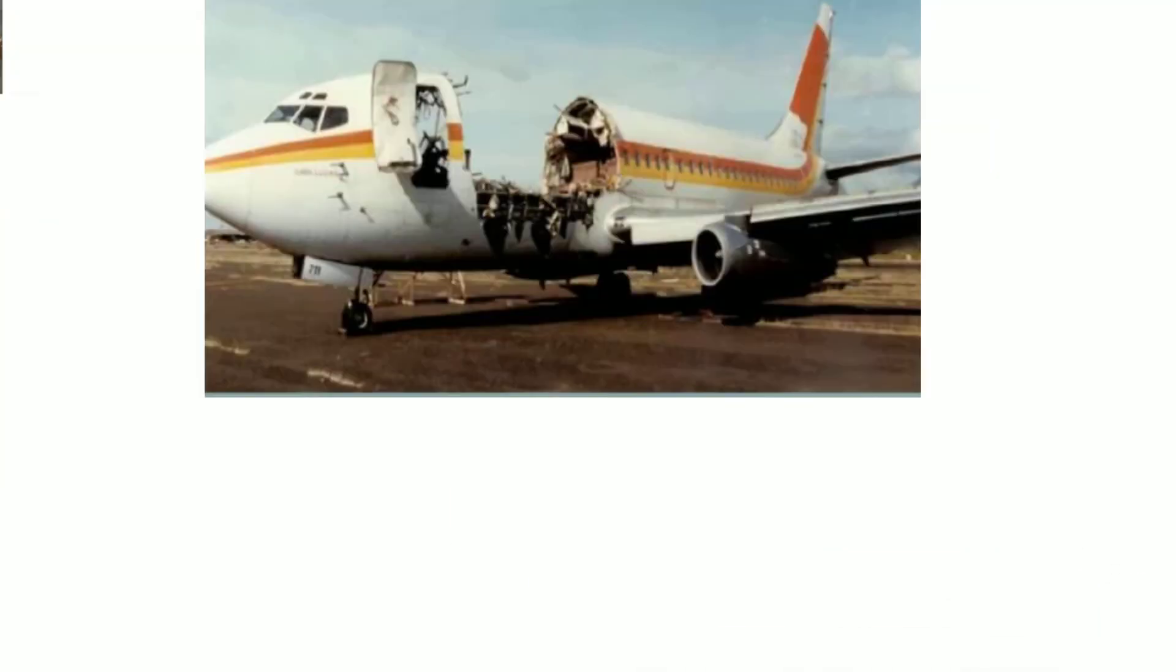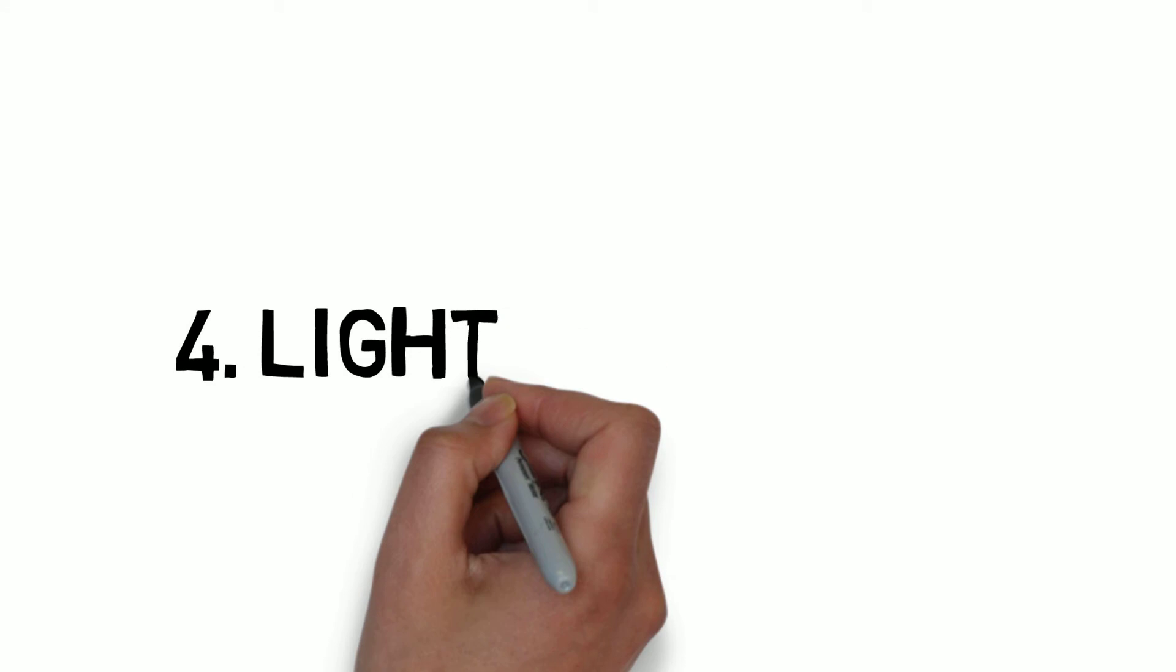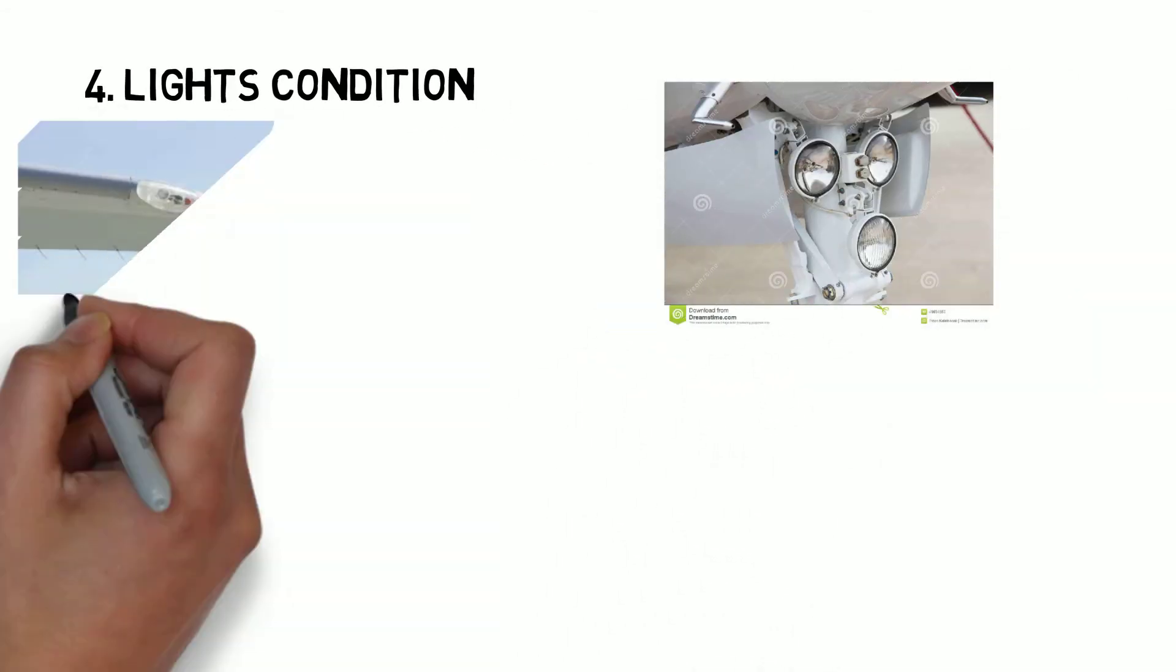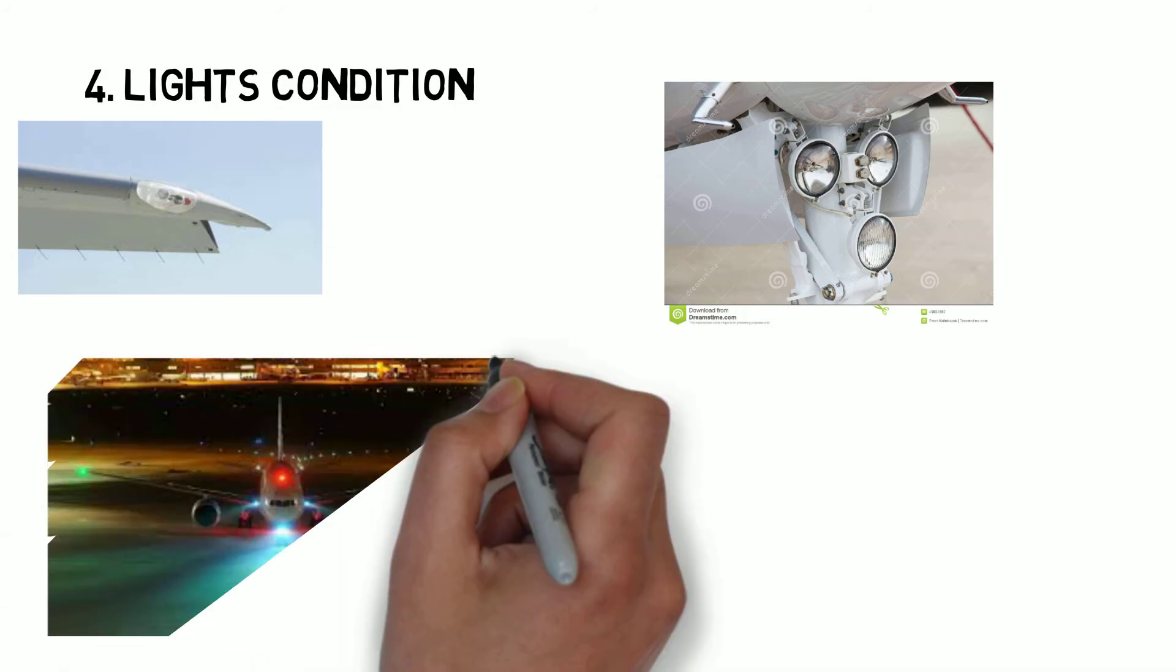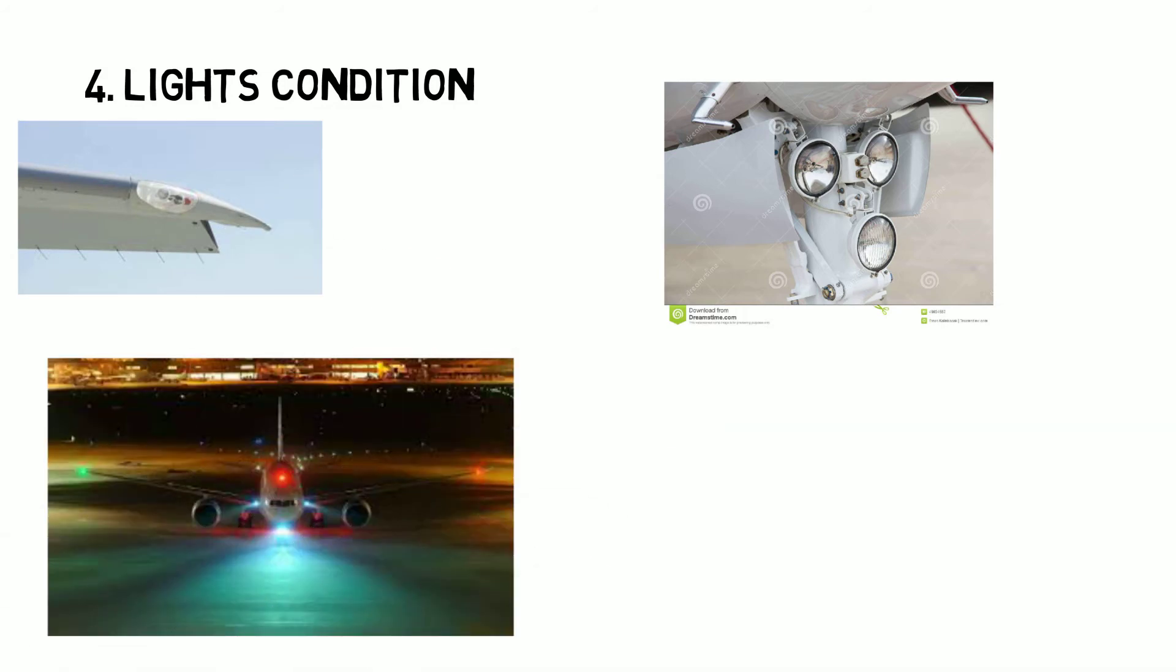Check each drains are clear. Lights, look for the lights condition including landing gear light, wing tip lights, strobes light, navigation lights, tail strobe light, exterior light on wheels. Look for cracks and damages on lights also.